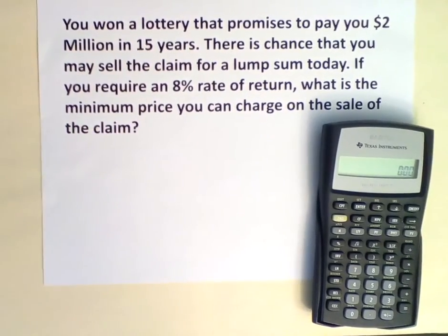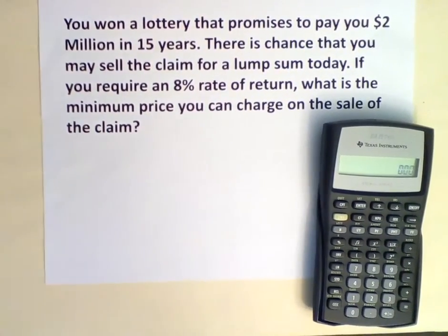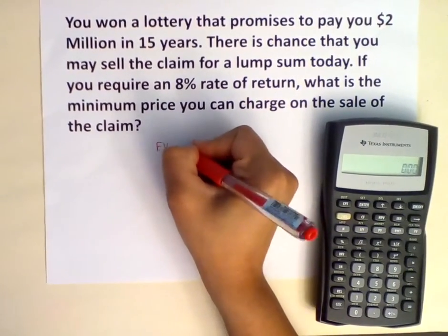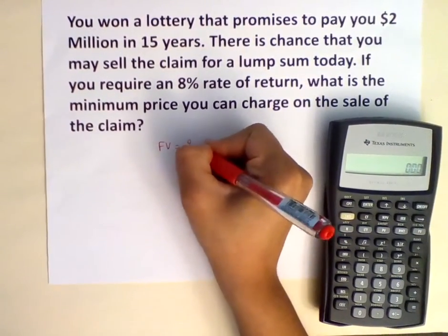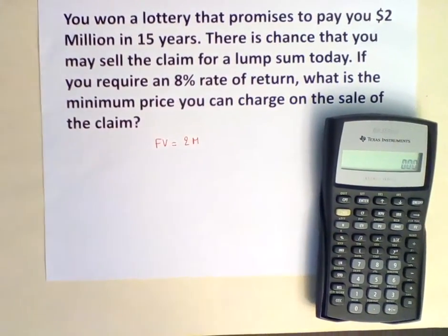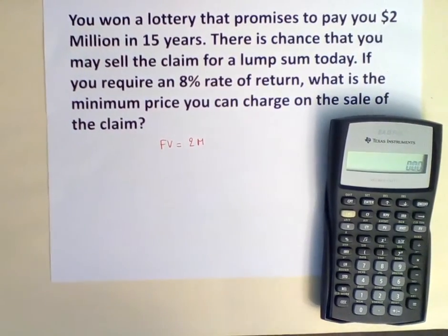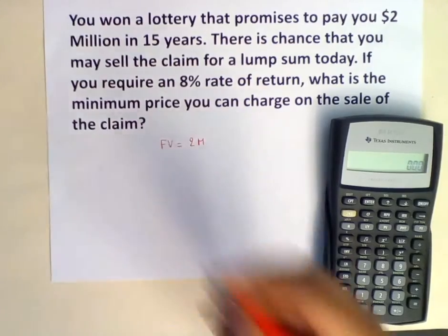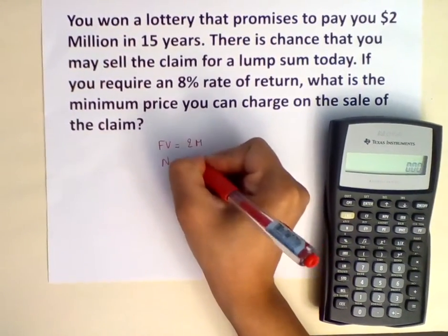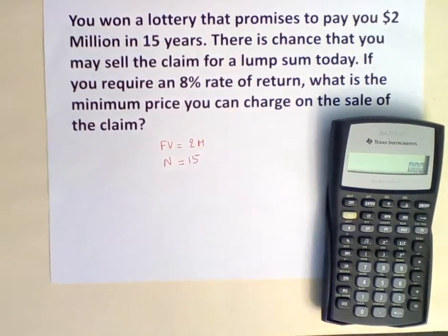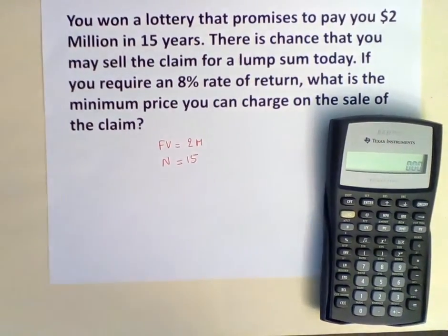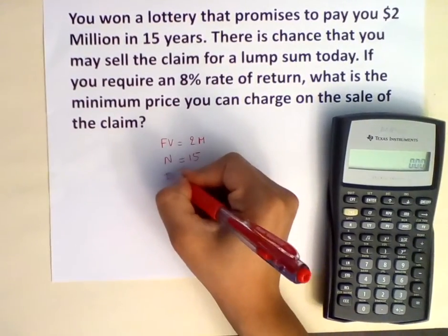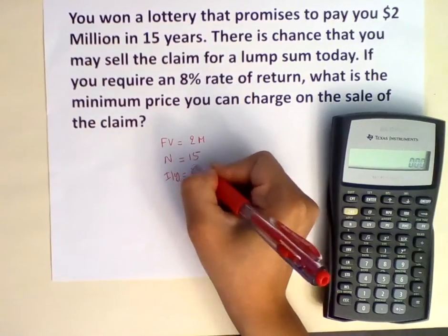The lottery promises to pay $2,000,000 in 15 years, so FV, or the future value, equals $2,000,000. We are receiving this $2,000,000 in 15 years, so N would be 15. We require an interest rate of 8%, so I/Y equals 8%.